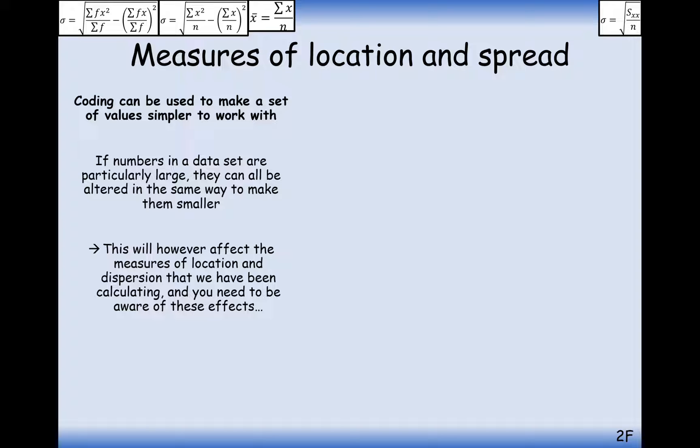So the coding will affect the mean and the standard deviation of our values. Let's just have a look at this set of data here. So we've got these people's heights, the mean is about 159 and the range is 27.